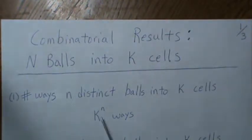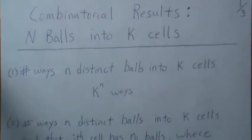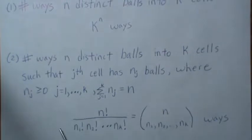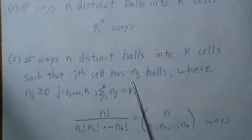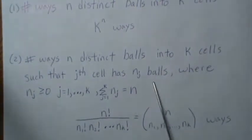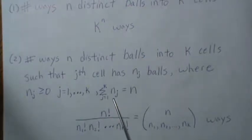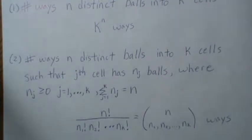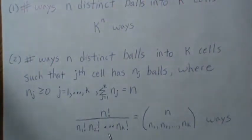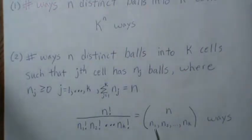The number of ways we can place n distinct balls into K cells is K raised to the n. For Case 2, we have n distinct balls in K cells such that each cell has a known number of balls, and the number of balls in each cell sums to n. We want to know how many different ways we can arrange these balls — for example, 5 in cell 1, 2 in cell 2, 0 in cell 3, 9 in cell 4. The formula is the multinomial coefficient: n choose n₁, n₂, ..., nₖ ways.